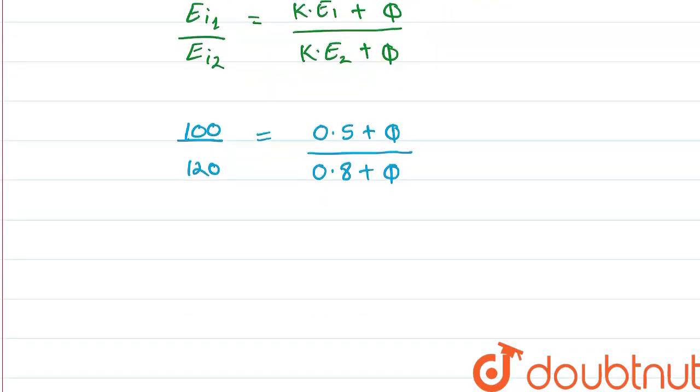And cross multiplying here, we will be getting 60 plus 125 is equal to 80 plus 105.